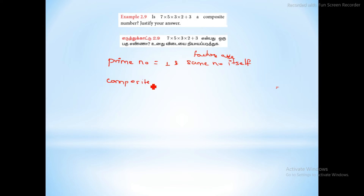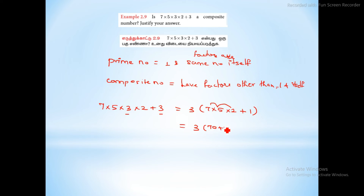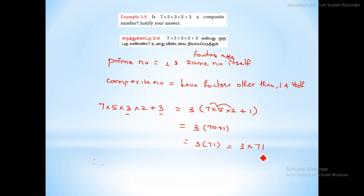A composite number has more than two factors. For 7 into 5 into 3 into 2 plus 3, we take 3 as common: 3 into 7 into 5 into 2 plus 1. That equals 3 into 71, since 7 into 5 into 2 is 70, and 70 plus 1 equals 71. So we have two factors: 3 and 71. Hence it is a composite number.